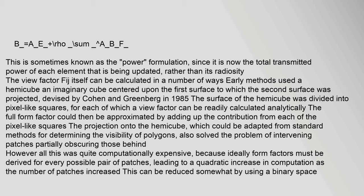This is sometimes known as the power formulation since it is now the total transmitted power of each element that is being updated rather than its radiosity. The view factor F_ij itself can be calculated in a number of ways. Early methods used a hemicube — an imaginary cube centered upon the first surface to which the second surface was projected — devised by Cohen and Greenberg in 1985. The surface of the hemicube was divided into pixel-like squares for each of which a view factor can be readily calculated analytically. The full form factor could then be approximated by adding up the contribution from each of the pixel-like squares.